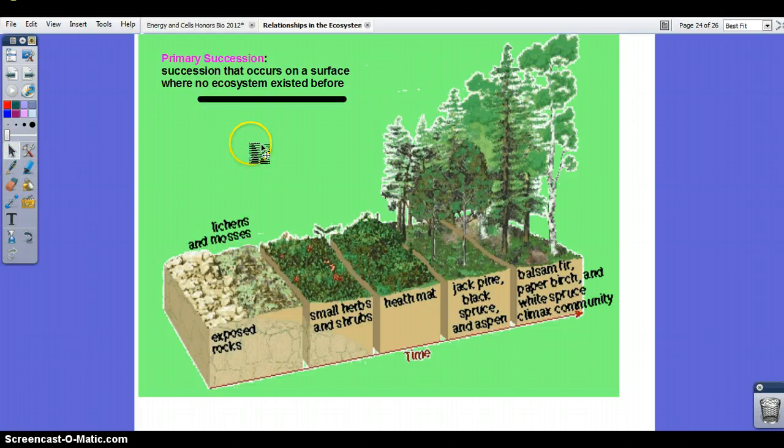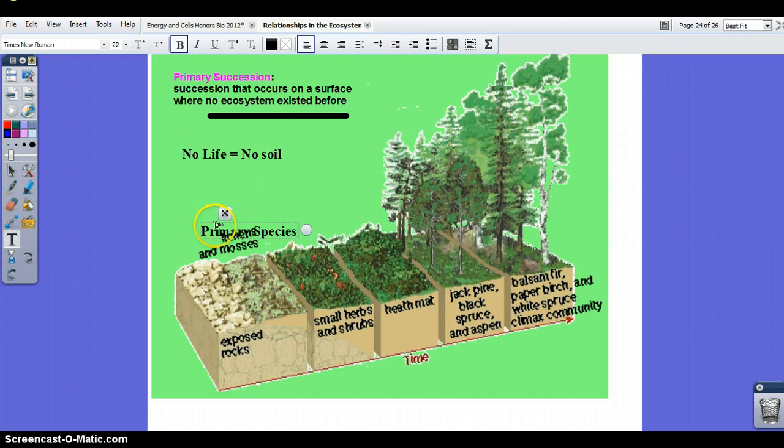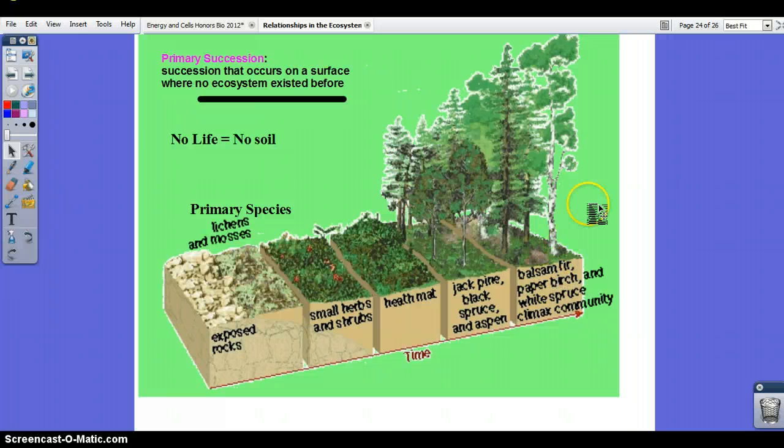Primary succession is basically in an area where no life existed prior. This is very hard to find, obviously. If there's no life, that means there's no soil. And basically what happens is you have rock and these primary species, and you have to reference them as primary species, which are called lichens or mosses, basically will break down the rock with the aid of weathering. So nutrients will be brought in through wind and water and they break down the rock. And eventually you'll start to see some kind of growth of weeds, shrubs. Eventually you'll see formations of trees, starting with pines. And if the community continues to evolve or grow, you will see hardwood trees like birch and oak.